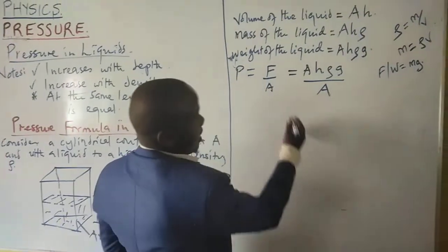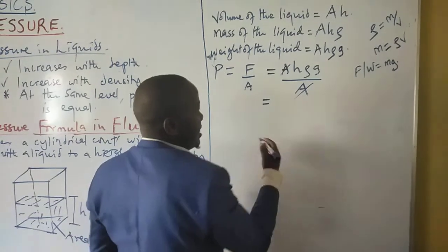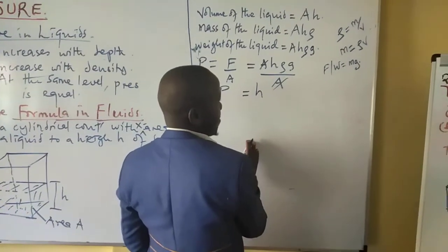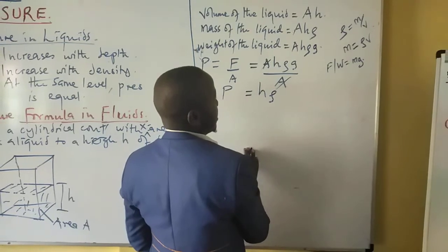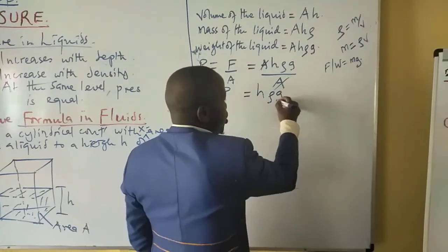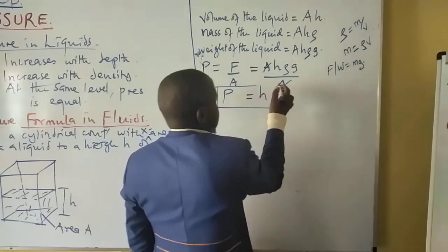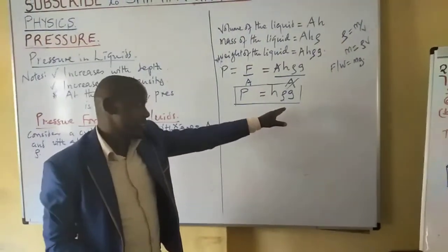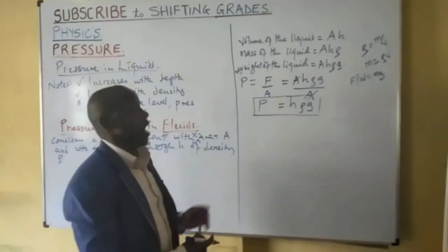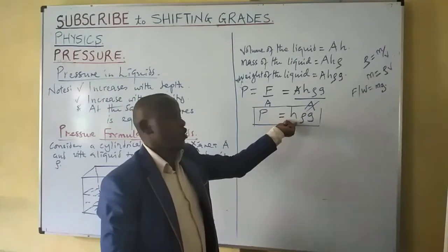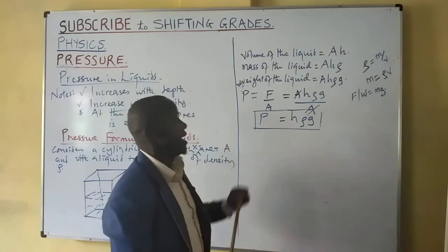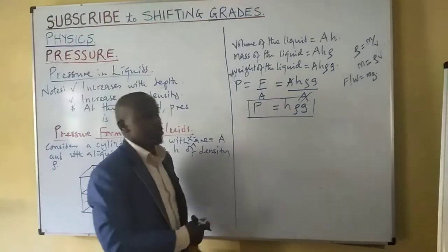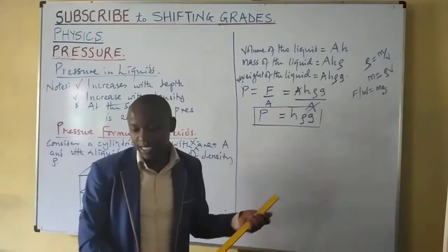Therefore pressure in a liquid is given by P = hρg, where h is the height of the liquid column, ρ is the density of the liquid, and g is the gravitational acceleration — a constant. Pressure is directly proportional to both the height of the liquid column and the density of the liquid.